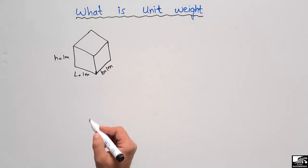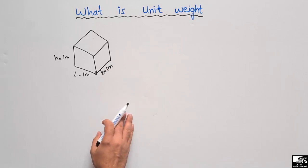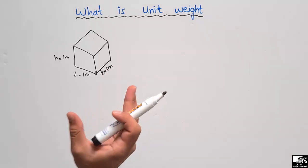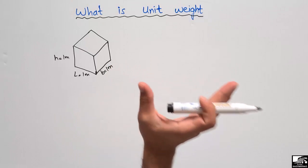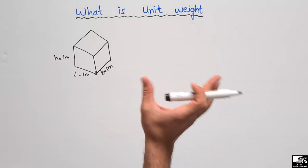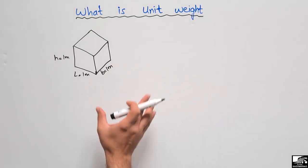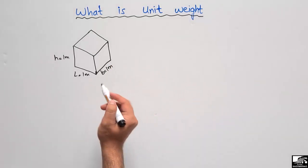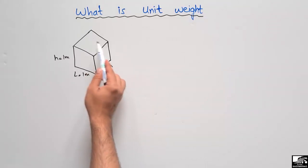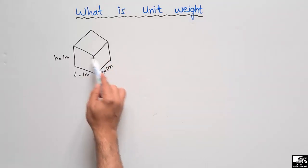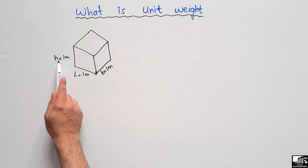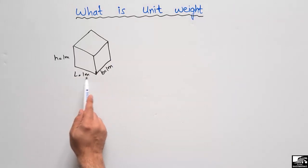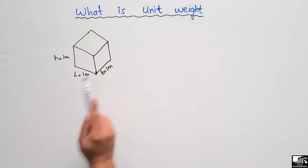For example, the unit weight of steel is expressed in kilogram per cubic meter. What this means is: how much weight of the material is present in a cube with a height of 1 meter, length of 1 meter, and width of 1 meter.